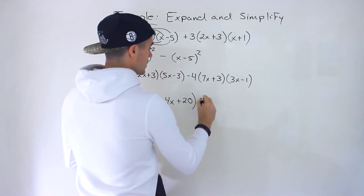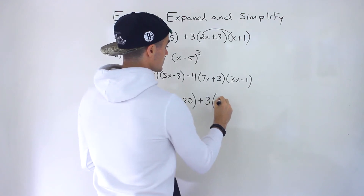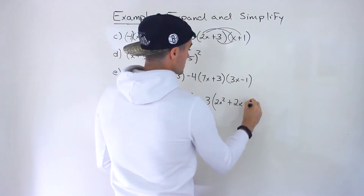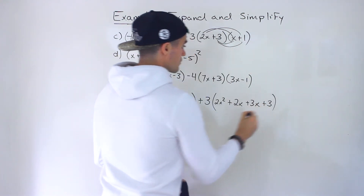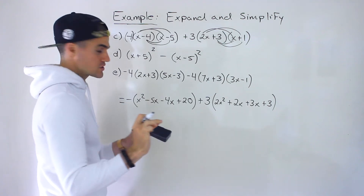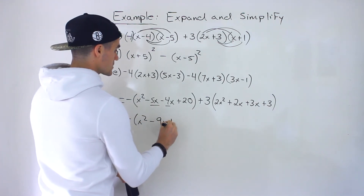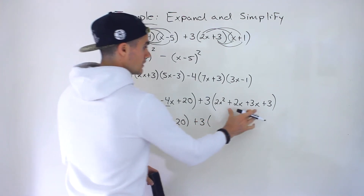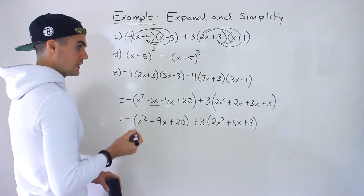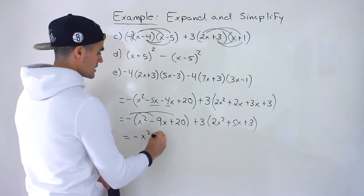Over here, I'll keep the positive 3 on the outside and multiply the two brackets: 2x times x gives 2x squared; 2x times 1 gives positive 2x; 3 times x gives positive 3x; 3 times 1 gives positive 3. Now simplify inside the brackets before distributing. The first bracket: minus 5x minus 4x are like terms, giving minus 9x plus 20. The second bracket: 2x plus 3x gives positive 5x plus 3. Now distribute the negative 1 into the first bracket: negative x squared plus 9x minus 20 — all signs change.